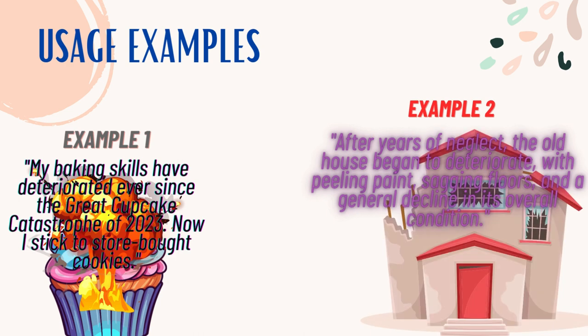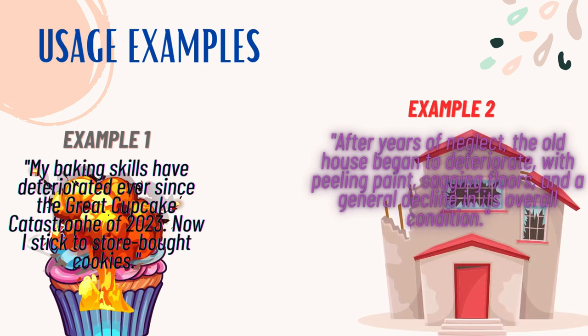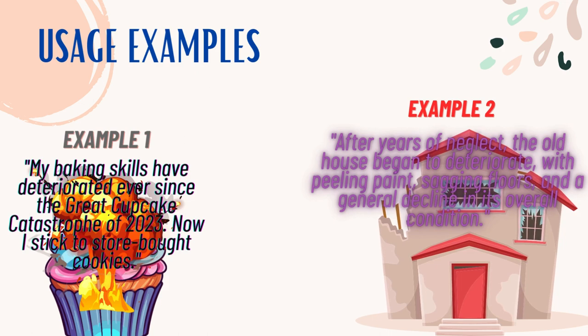Example 2: After years of neglect, the old house began to deteriorate, with peeling paint, sagging floors, and a general decline in its overall condition.